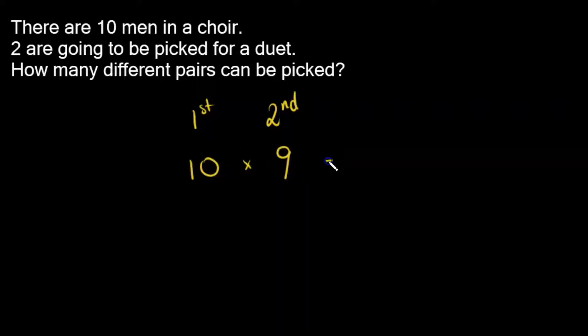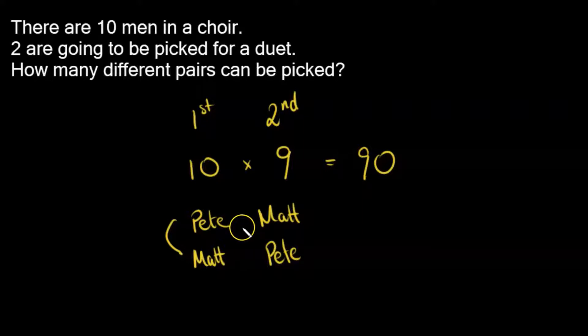So you might say, OK, let's multiply these numbers together. That should give us 90 pairs. But let's think about this. If the first person is called, let's say, Pete, and the second person is called Matt, then if I had picked Matt first and then picked Pete, these two pairs are in effect the same pair. So I'm running the risk of duplicating inside of these pairs. So the way to solve this is very simple.